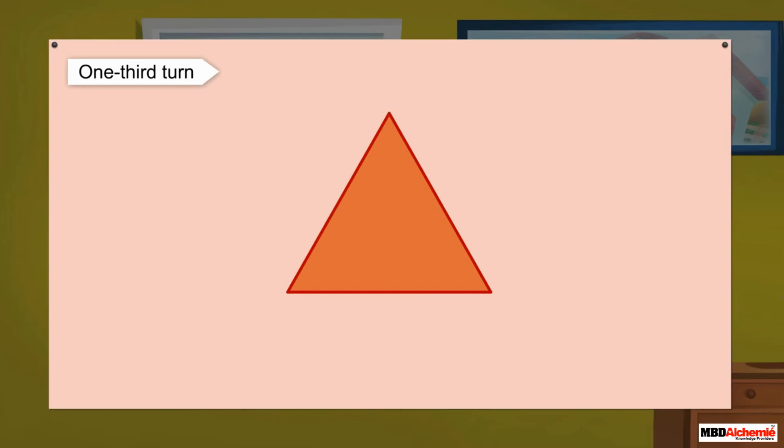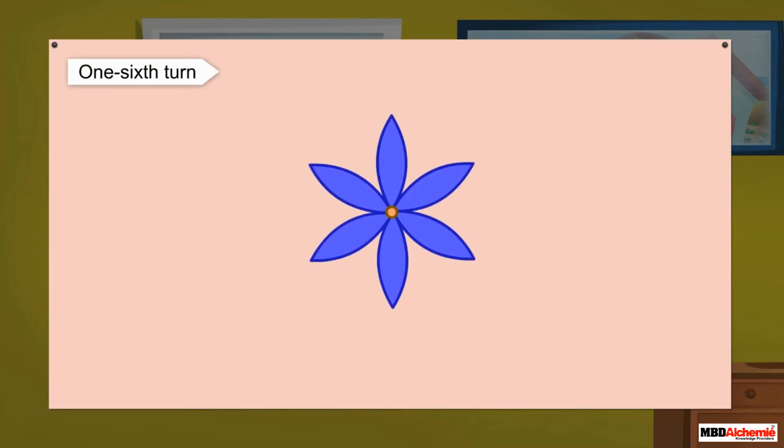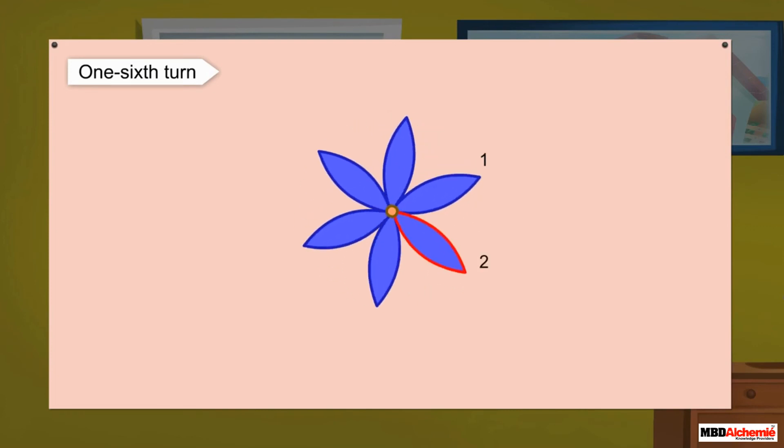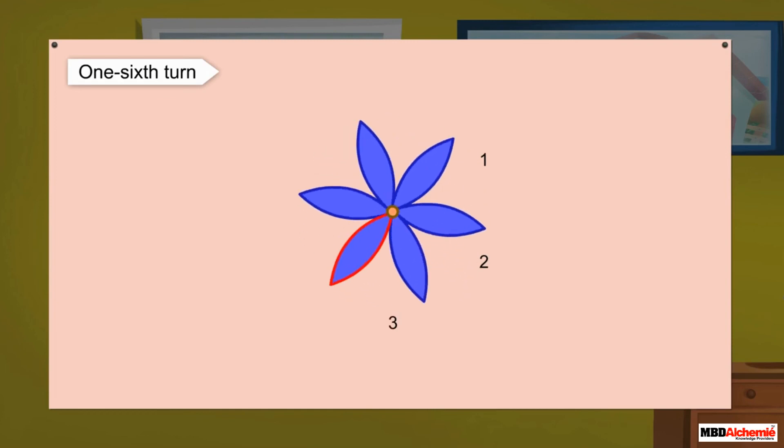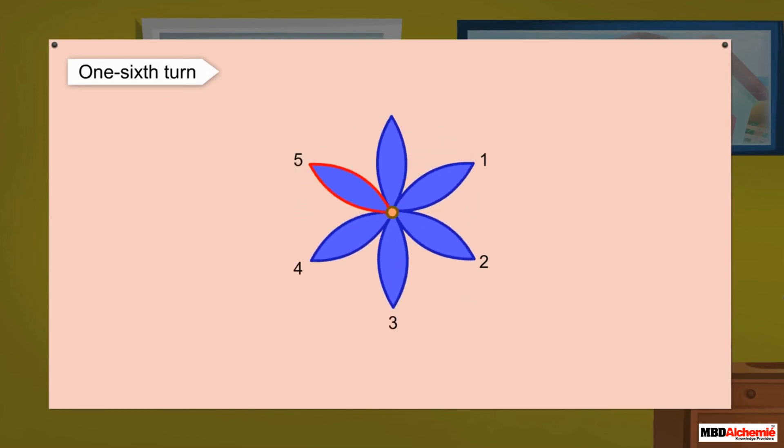Let us see some more pictures. One-sixth turn. Here is a picture of a flower. When we make a one-sixth turn, the figure does not change. After each one-sixth turn, the figure looks the same. And after turning it six times, all parts return to its original position.